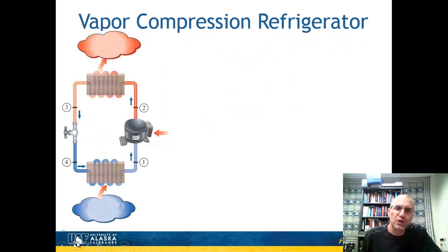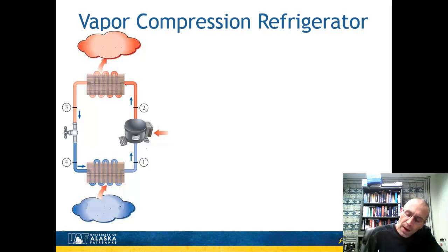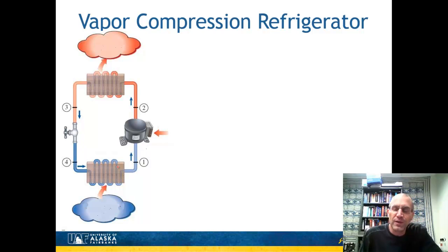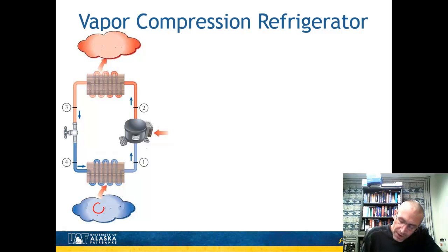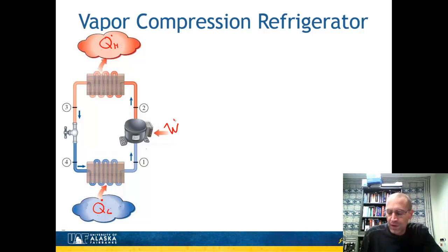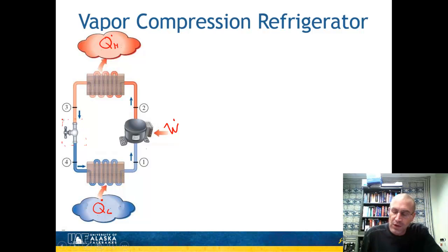Let's look at the vapor compression refrigeration cycle. There are four main components: a compressor, two heat exchangers — one at high temperature and one at low temperature — and a throttling valve. Any fluid that undergoes phase change can operate in this cycle. Refrigerants are typically used because their phase change occurs at lower temperatures, allowing us to keep things colder than we could with water. Q_L is at the lower temperature, Q_H comes out at the higher temperature, and work input goes into the compressor. The throttling valve has no work requirement and no heat input or output — it is isenthalpic.